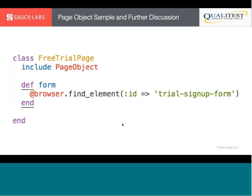Here's a basic example of a Page Object. It's modeled after the free trial page on Sauce Labs — a free trial sign-up form. The page object models the form on it, using the ID of the form with browser.find_element, which returns the Selenium element. I've modeled the free trial form into this FreeTrial page object, which I can access and use later. Anytime I'm dealing with the form, the only place I'll have to change it is right here.